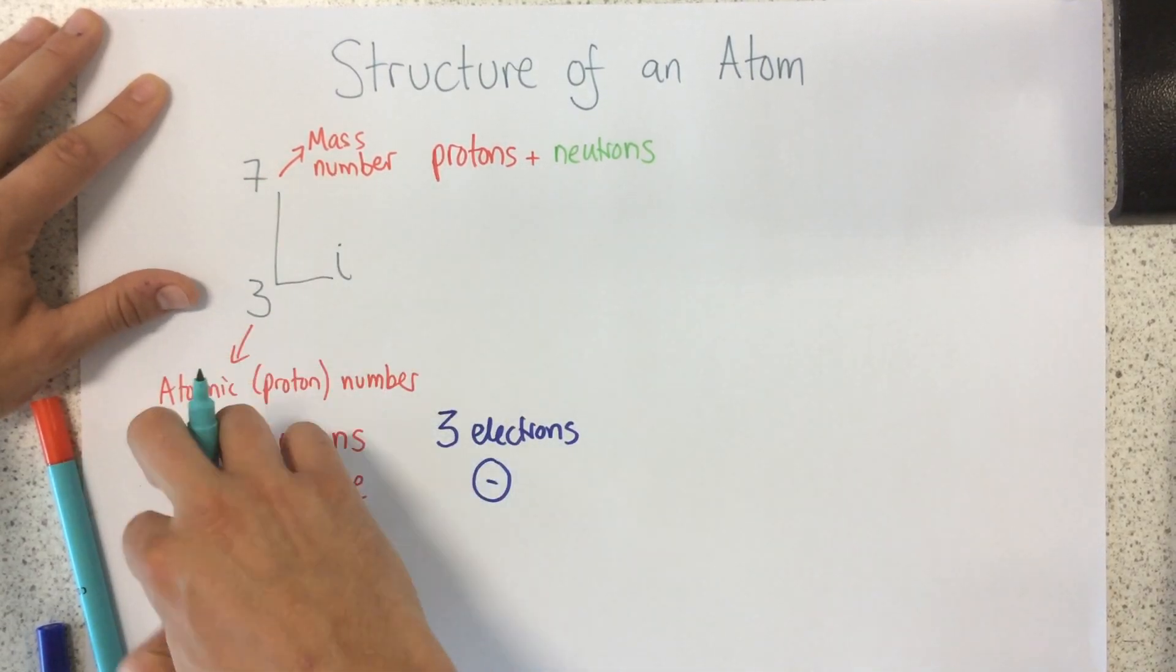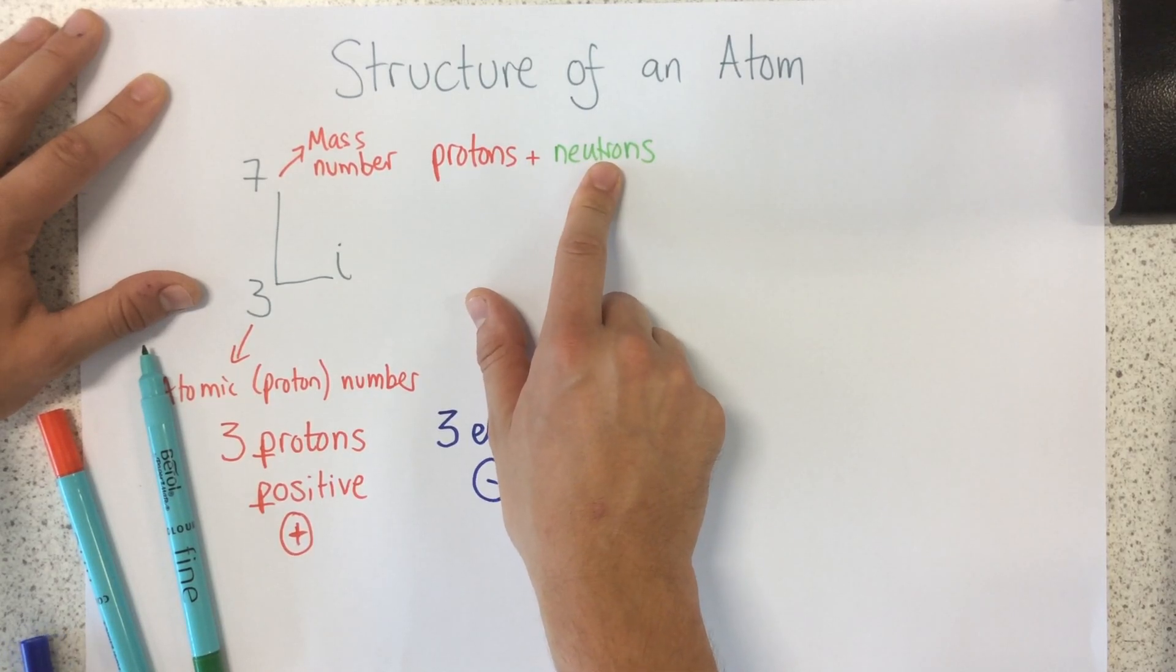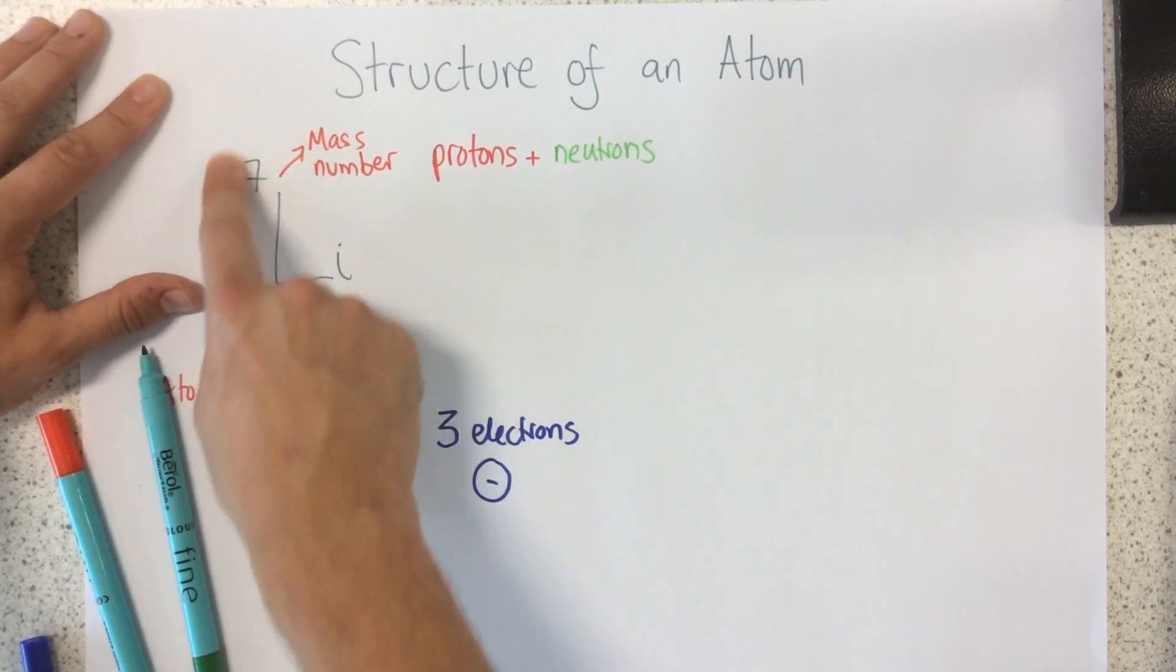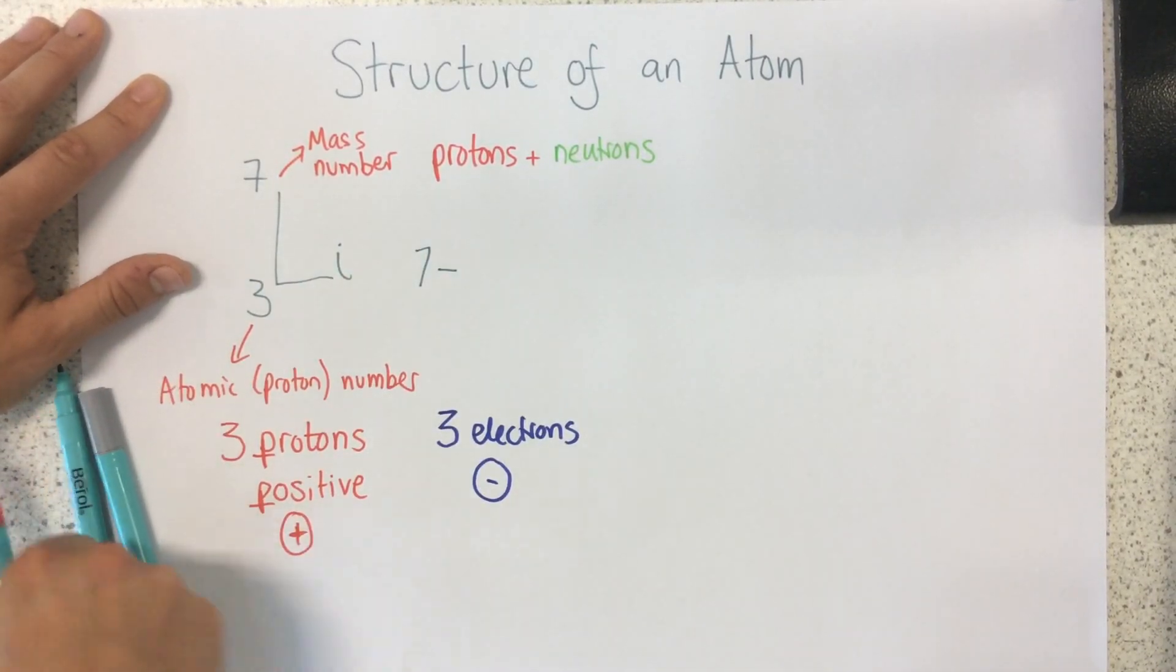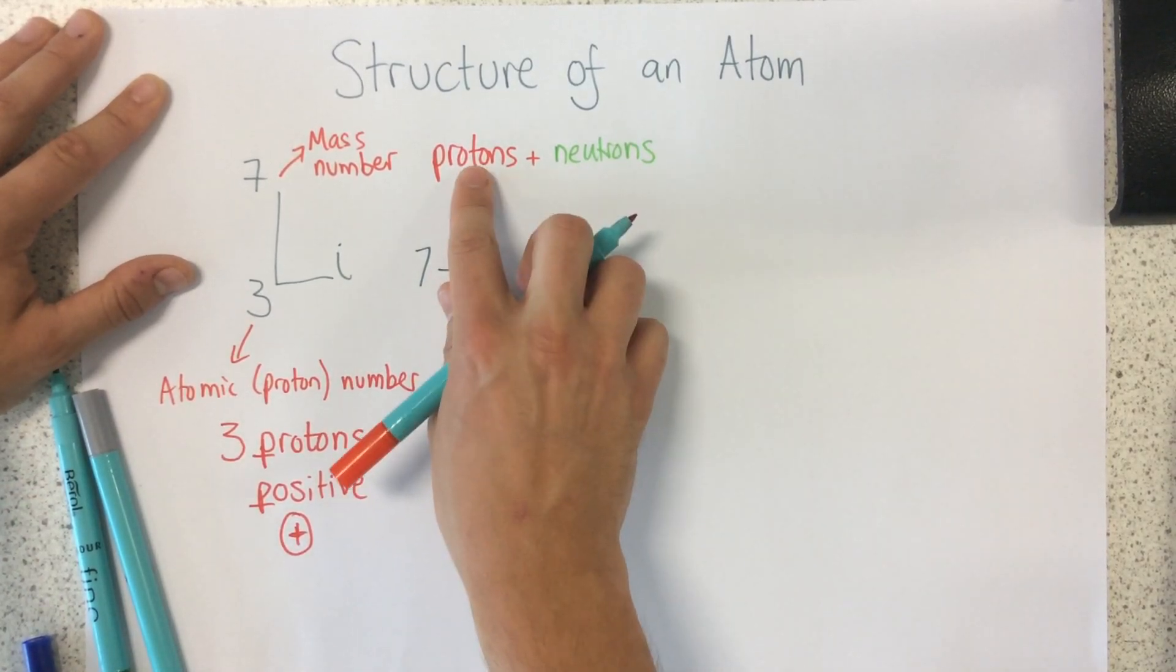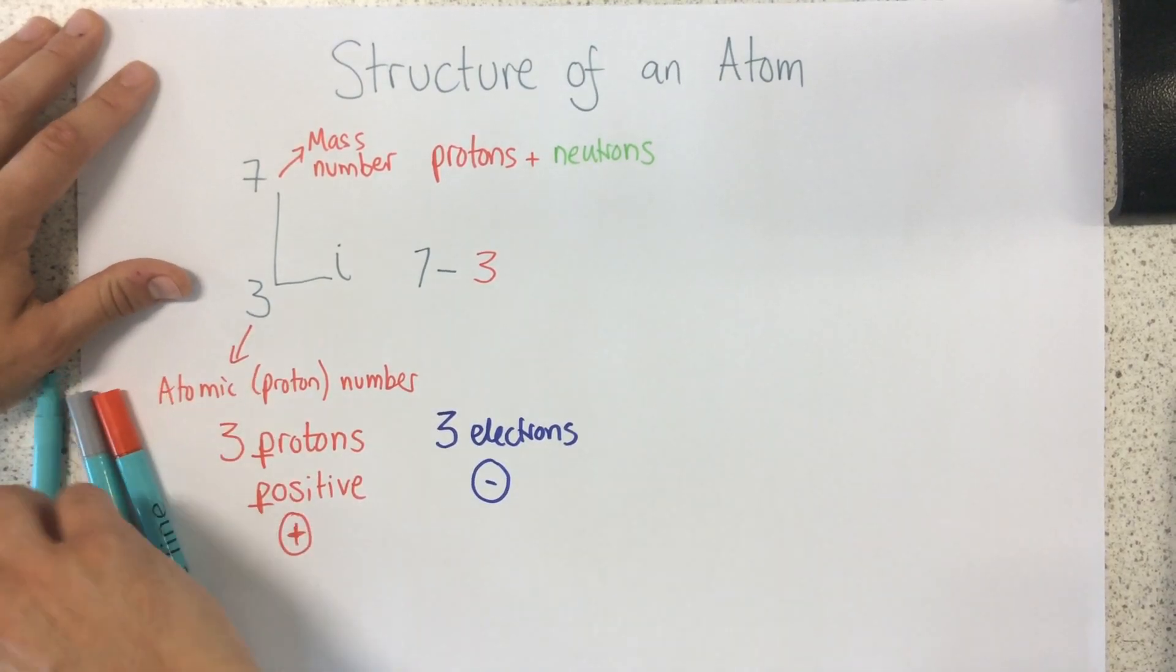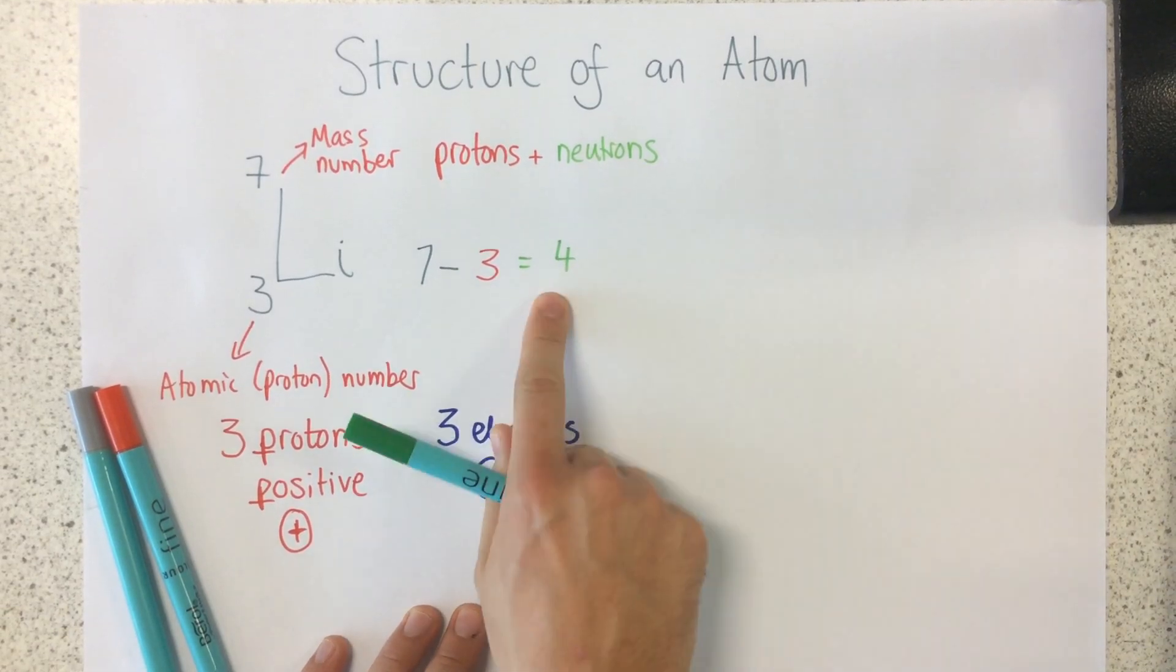So if this mass number is 7, I can figure out how many neutrons I've got by doing 7, because there's 7 protons and neutrons. So if I do 7, take away 3, because I know there's 3 protons, because that's my proton number. That tells me how many neutrons I've got. So I've got 4 neutrons.